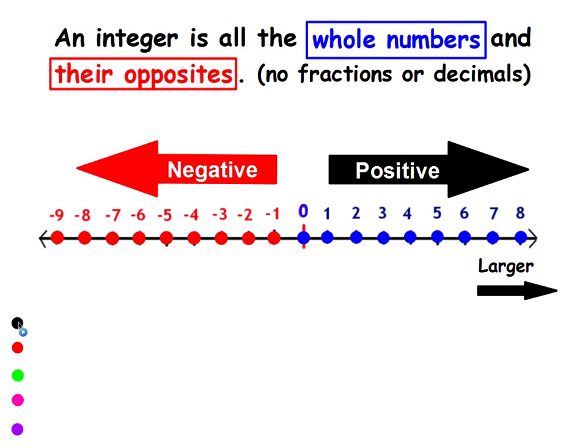The further I go to the right on the number line, the larger my number is. And the further I go to the left on the number line, the smaller my number is.